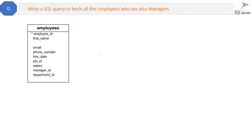Suppose you have an Employee table where all the employees with their employee ID are present. Managers are also employees, so they are also present with their employee ID. Most employees will have a manager, so in the same table there is a manager ID column, which is nothing but the employee ID of the manager of that employee.